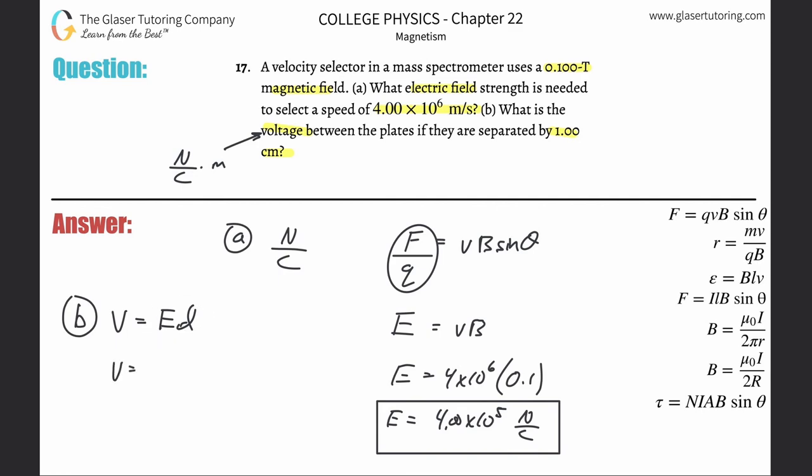So here, the electric field is going to be 4 times 10 to the 5th, as we just found, times the distance between them. Oh, they gave it to you in centimeters. You know we need that in meters, so multiply that by 10 to the minus 2. And go about your business. So we don't really need a calculator for this. This is going to be 4.00 times 10 to the 3rd. Volts, or newton meter per coulomb, doesn't matter. Anyway, that's that.